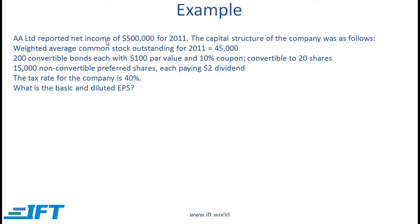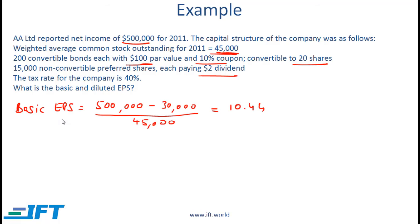Consider another example. Net income is 500,000. The capital structure includes a weighted average number of stocks outstanding for 2011 of 45,000, 200 convertible bonds each with $100 par value and 10% coupon convertible to 20 shares, and 15,000 non-convertible preferred shares each paying a $2 dividend. We are also given the tax rate. Basic EPS is net income minus preferred dividend divided by weighted average shares outstanding, which equals 10.44.